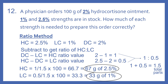Now we need to get the total parts, so we add those together: 1 plus 0.5 gives us 1.5 total parts. Our ratio of HC to LC is 1 to 0.5. To determine our amounts, we take the HC ratio over the total and multiply by the quantity needed: 1 over 1.5 times 100 gives us 66.7, which we round up to 67 grams of the 2.5%. For the low concentration: 0.5 divided by 1.5 times 100 gives us 33.3, which rounds to 33 grams of the 1%.